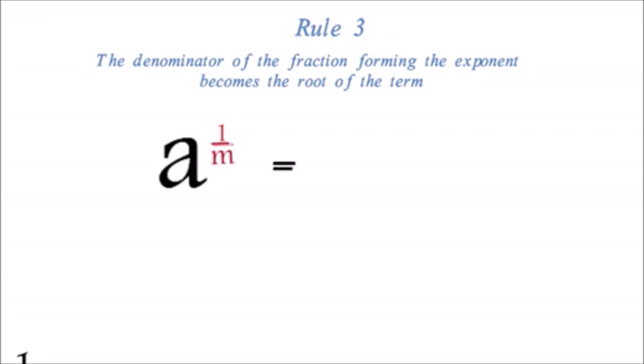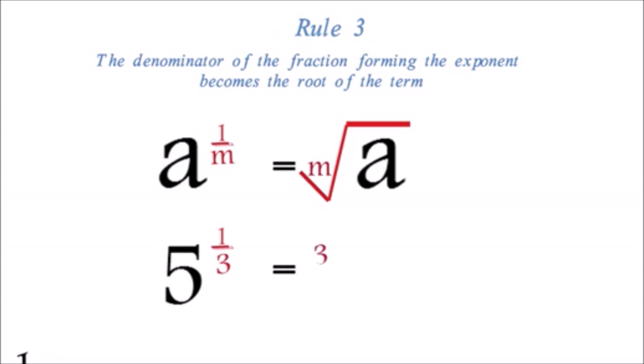Rule 3: Another important deduction is when the exponent is a fraction. The denominator of the fraction forming the exponent becomes the root of the term. The rule is a exponent 1 over m equals the m root of a. Example: 5 exponent 1 over 3 equals the cubed root of 5. Notice how the 3 became the cubed root.